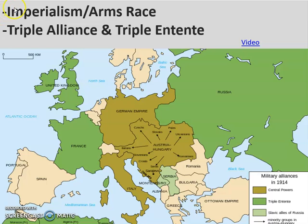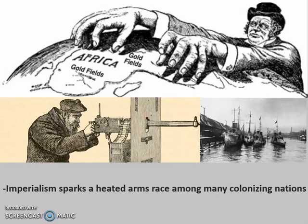We'll start with rampant imperialism during the 19th century. As you'll recall from a prior lecture, the 19th century was marked by a number of European powers as well as the United States and other powers reaching out to other areas of the world to take over other countries by force, in a bid to secure new markets for their goods and to assist their militaries. In order to do this, this imperialist race in places like Africa or the Pacific sparked a heated arms race among many of these colonizing nations. An arms race is simply who can build more guns, who can build bigger ships, who can create deadlier weapons technology. For example,